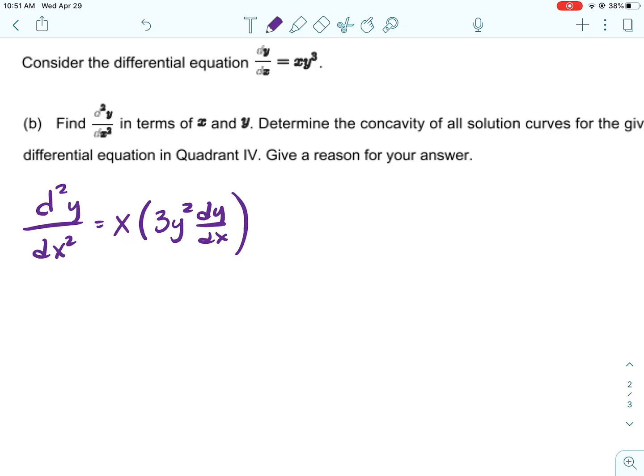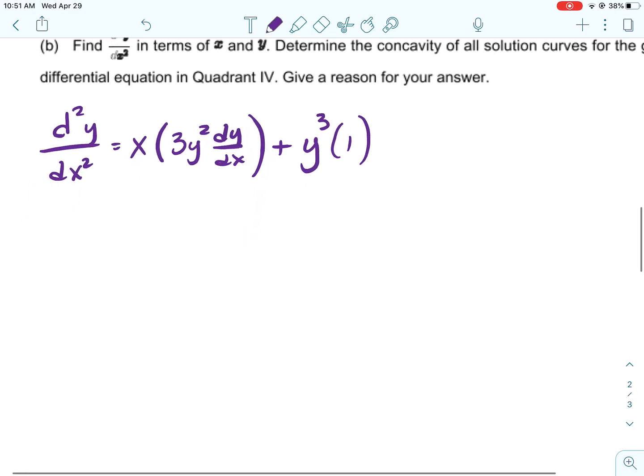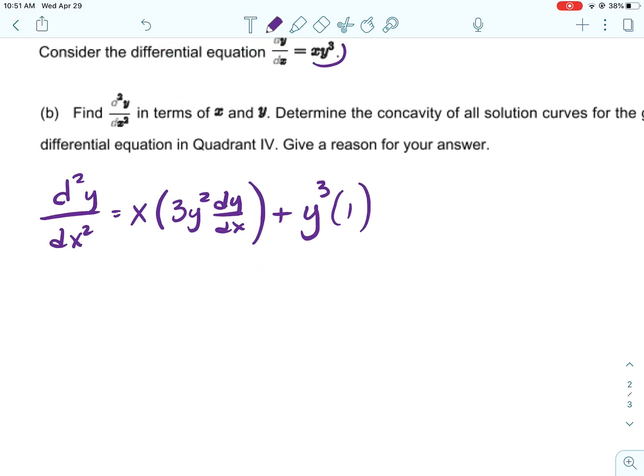All right, so we are going to use the product rule. So I'm going to leave the first factor alone, x, multiplied by the derivative of the second, which is going to be 3y squared dy/dx. And then plus, we're going to leave the second one alone and multiply by the derivative of the first, which is just 1.